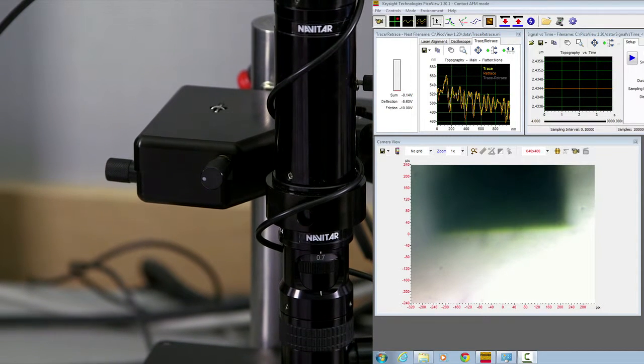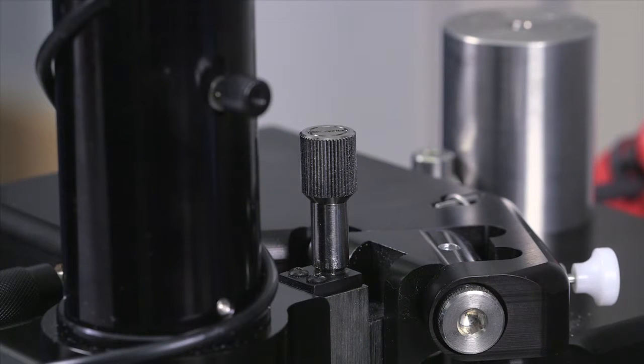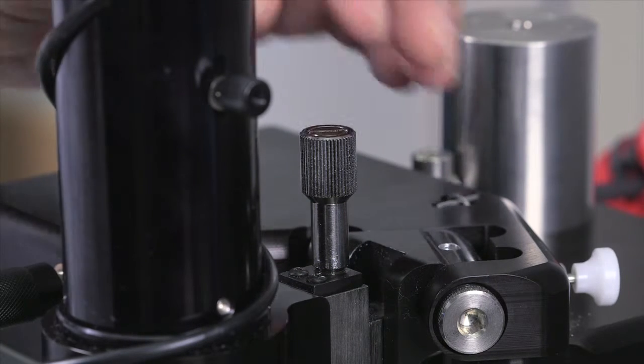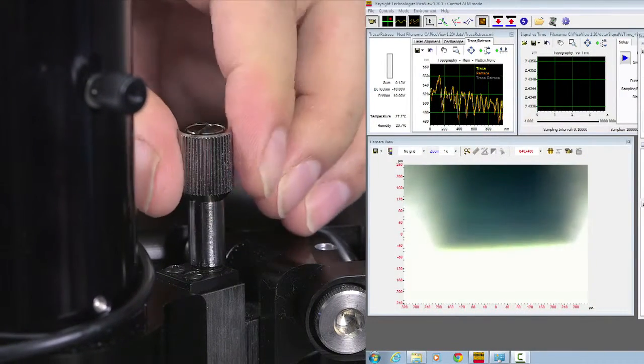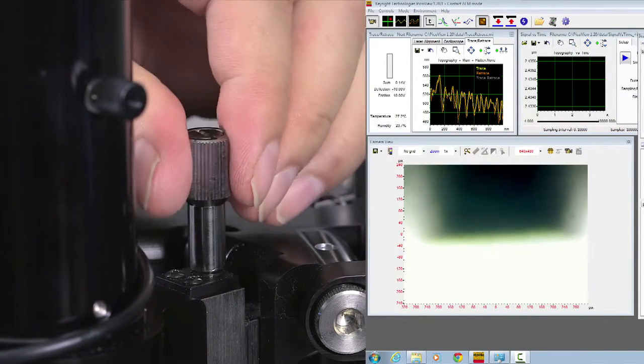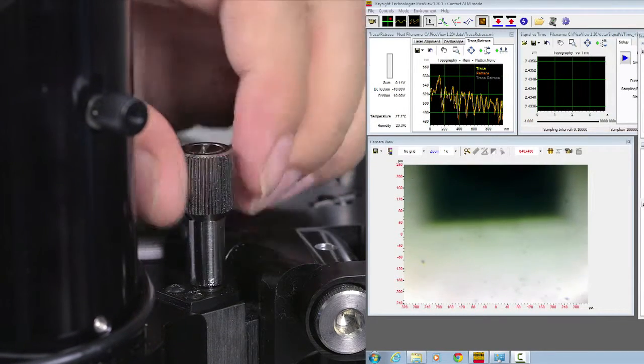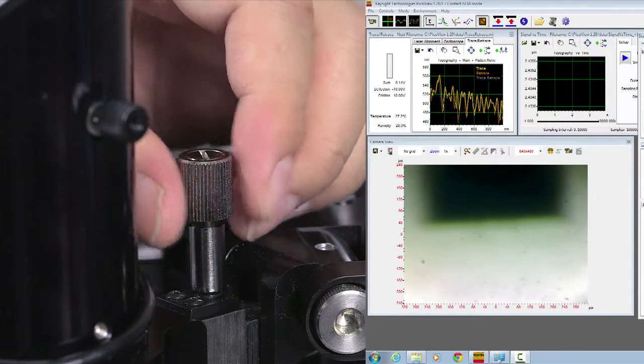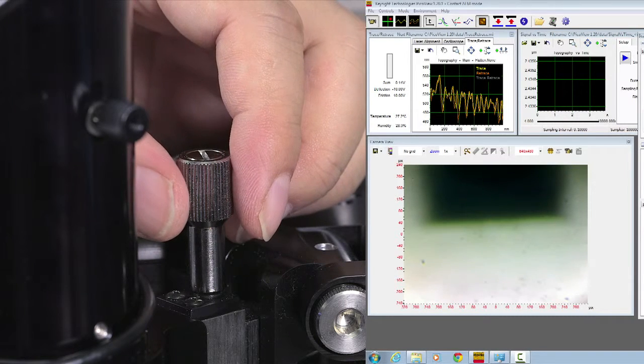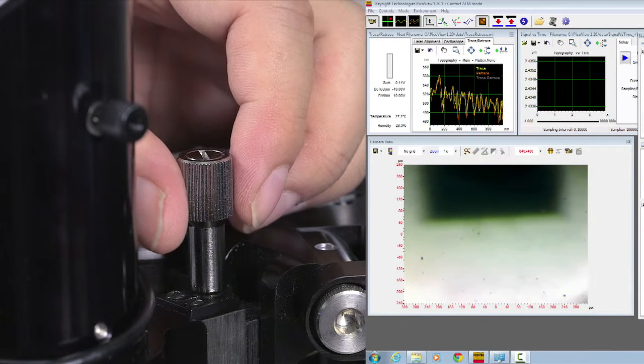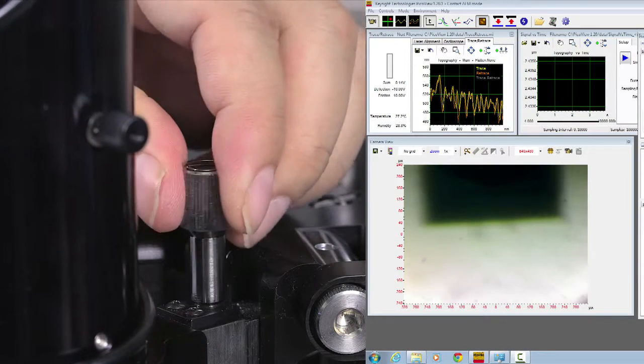Next is the focus. The focus adjustment knob is behind the optical microscope. You can rotate clockwise and counterclockwise to move the entire AFM optical microscope body up and down. Now, when you take that adjustment, also look at the computer screen, the optical view, in order to help you to focus.